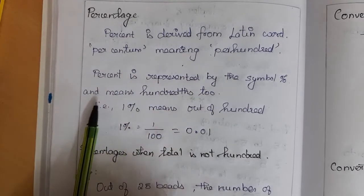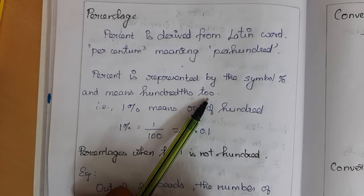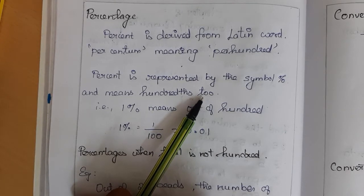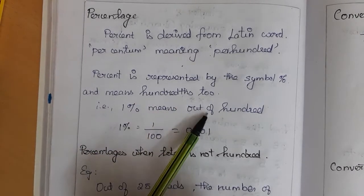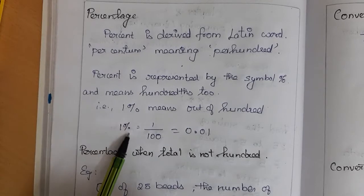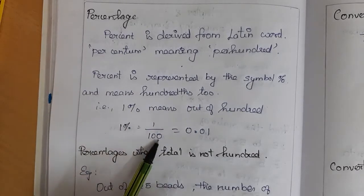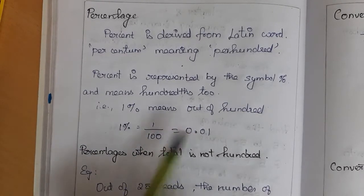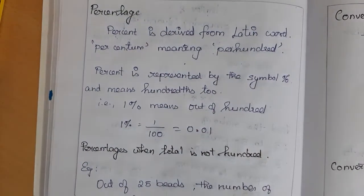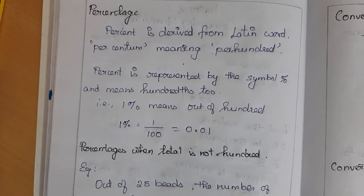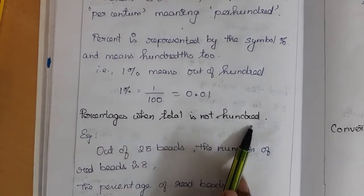Percent means hundredths — it is divided by hundred. So one percentage means out of hundred. One percent equals one divided by hundred, and if we simplify we get 0.01. So 0.01 is one percentage.